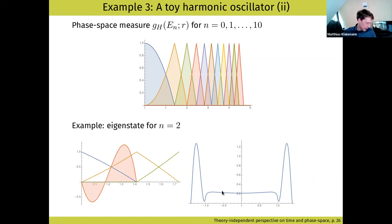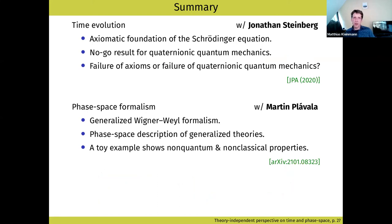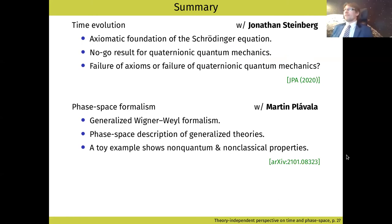I think I'm done with my time. To summarize: in the first part I spoke about time evolution and how to derive the Schrödinger equation axiomatically. In the second part I talked about how one can construct a phase-space theory for theories which are not quantum theory. Thank you for your attention.